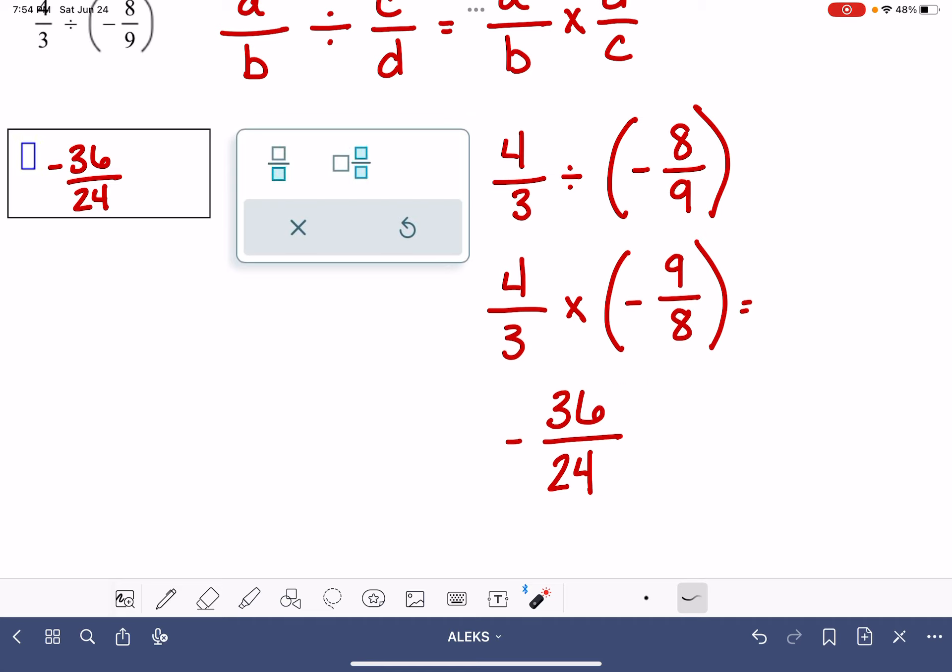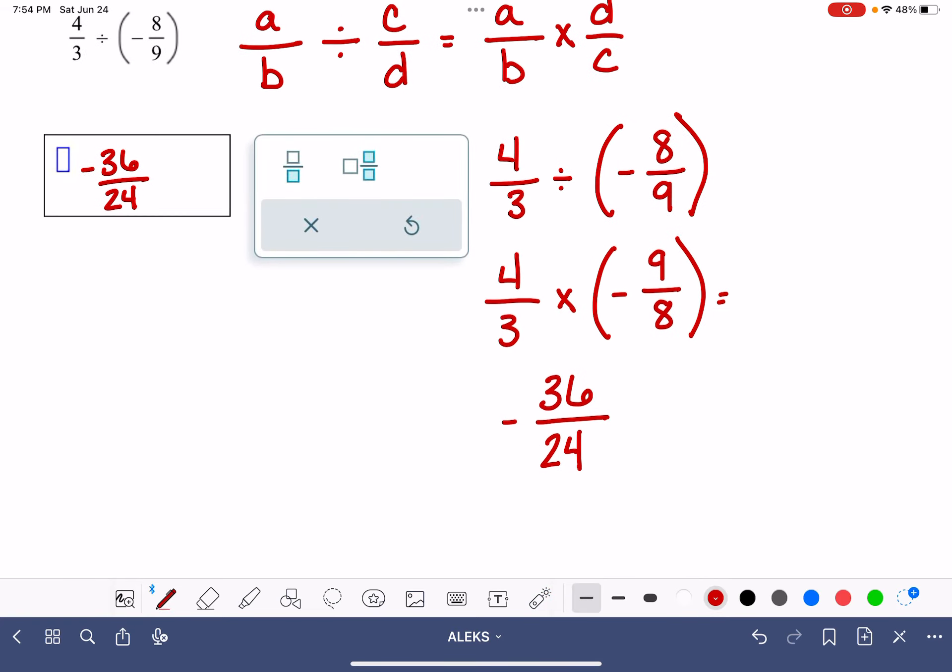That means I'm looking for the largest possible number that I can divide into both 36 and 24. And sometimes it's hard to see the greatest common factor right off the bat. And that's okay. If you can't see it right away, you can just find a small common factor.